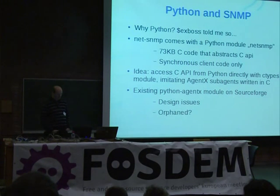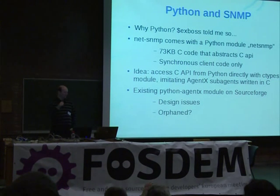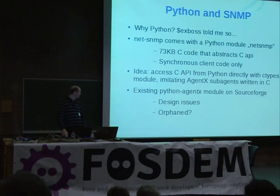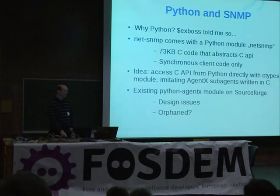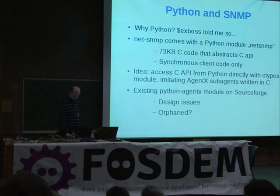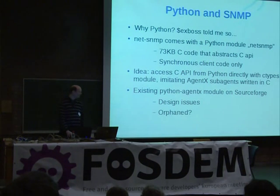The idea is to take the C API and access it from Python with ctypes, imitating AgentX sub-agents written in C. I'm not the first to have had that idea — there's a module on SourceForge called Python Agent X, but it had some design issues and looked rather old. I submitted patches, but after weeks and months of them not being considered, I decided to rewrite it myself so I actually understood it.